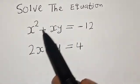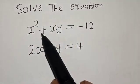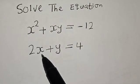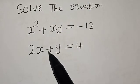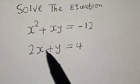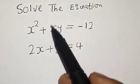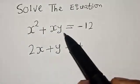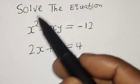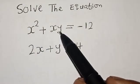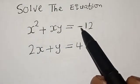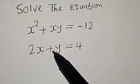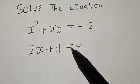The equation x squared plus xy is equal to minus 12, and 2x plus y is equal to 4. Hi everyone, welcome to my class. In this class, we want to find the value of xy from these given equations: x squared plus xy equals minus 12, and 2x plus y equals 4.